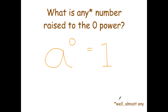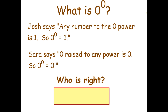Except there's one exception: almost any number raised to the zero power is one, but zero to the zero we have to look at in more detail. There are two different ways of thinking about it, both seemingly consistent with what we know. Josh says: any number to the zero power is one, so zero to the zero must equal one. But Sarah says: zero raised to any power is zero — for example, zero to the power of three is zero times zero times zero, which is zero — so zero to the zero equals zero.